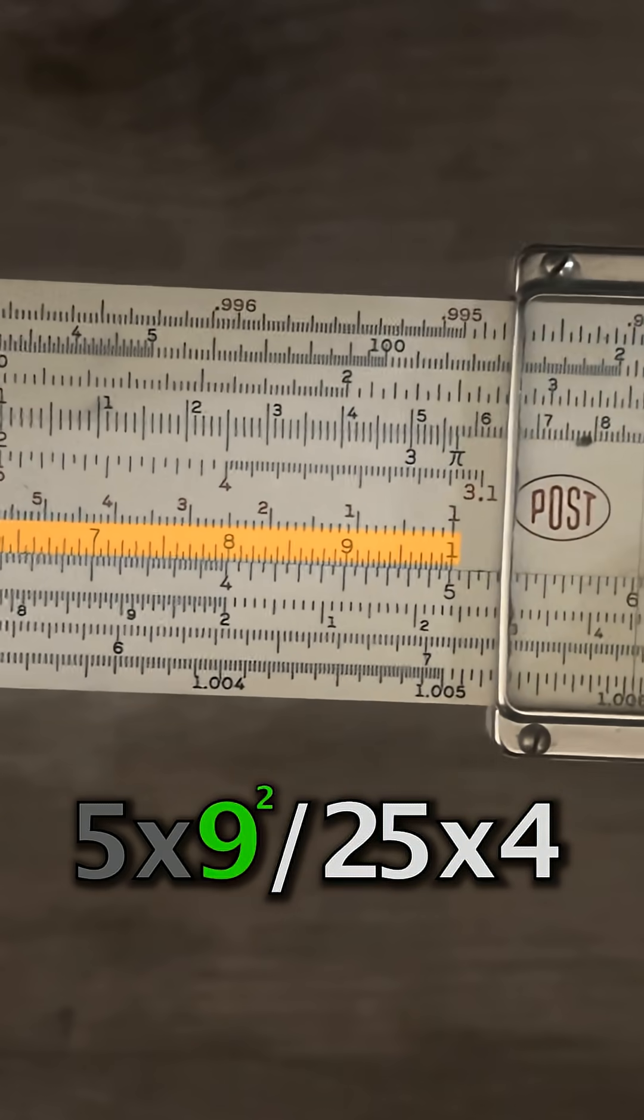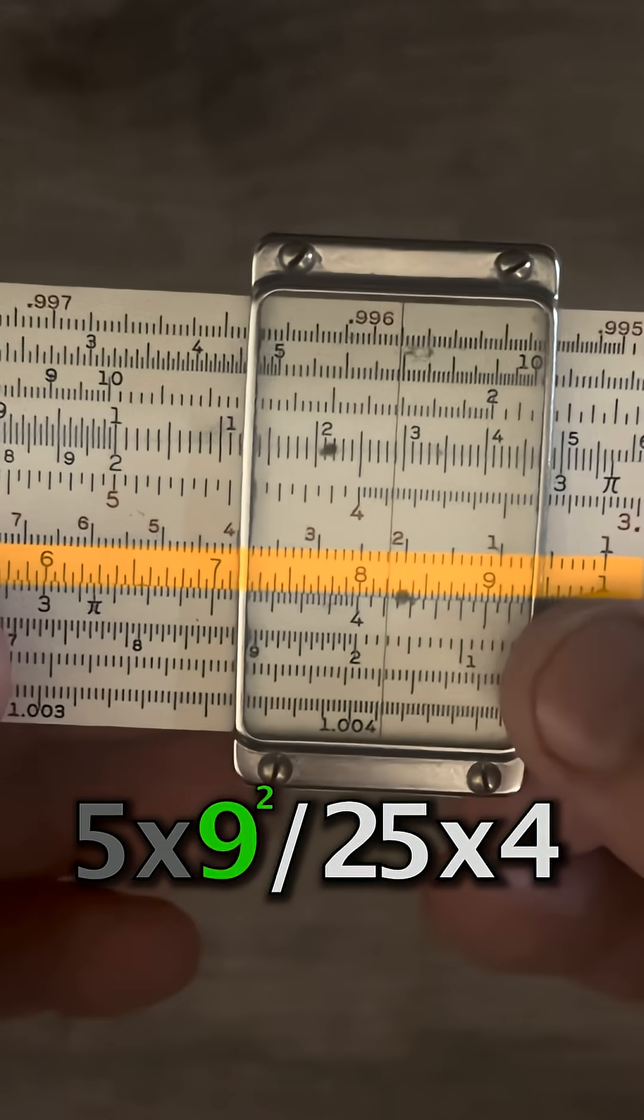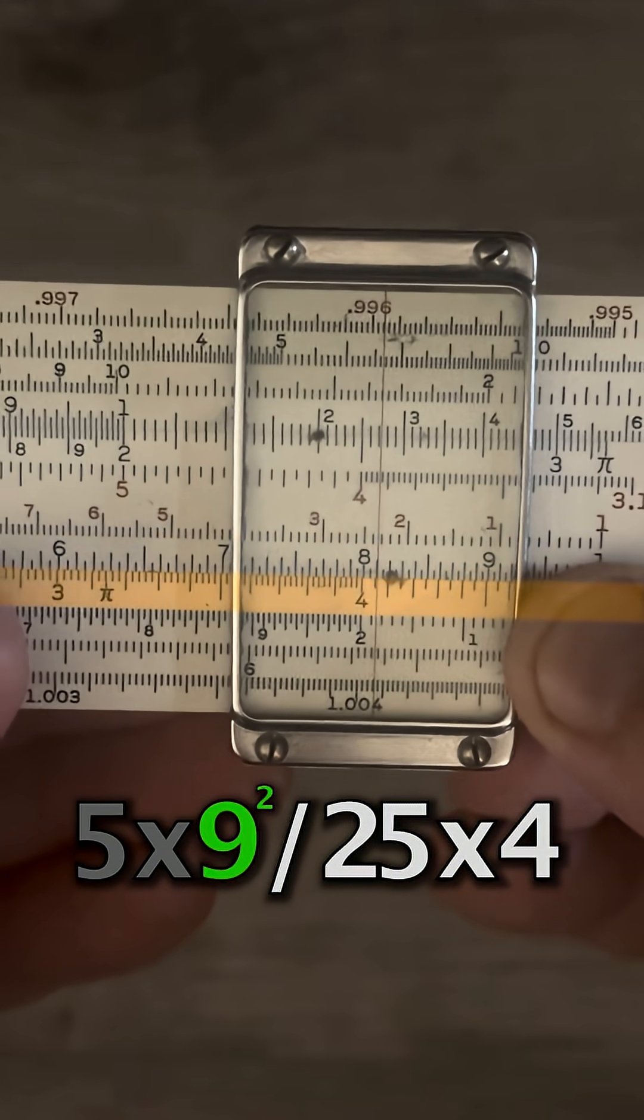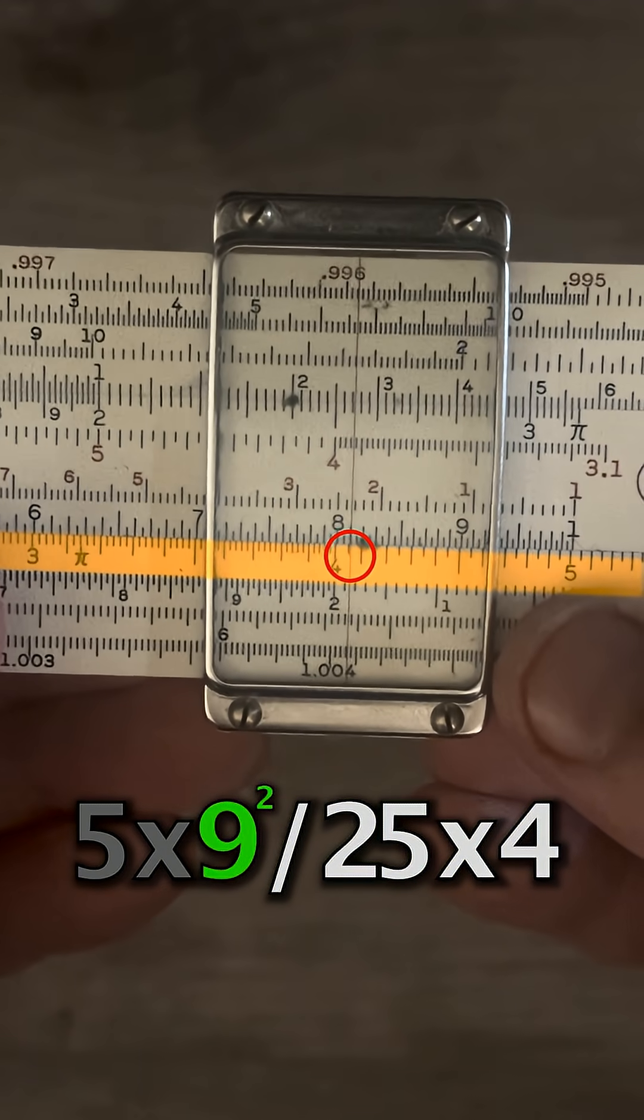So if we go back, we've already set our place with the right index. We'll slide over to 81 on the c scale and look below it to about 405 on the d scale.